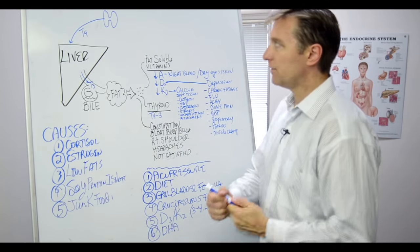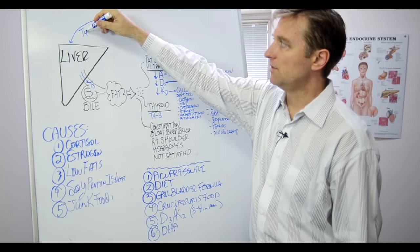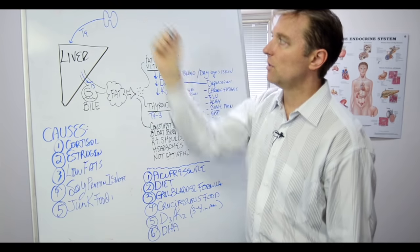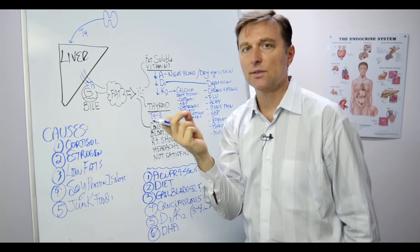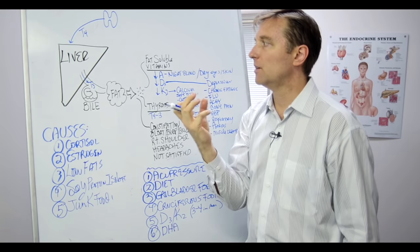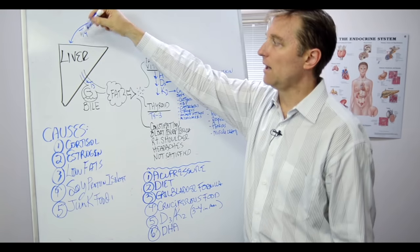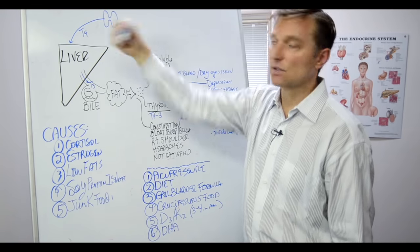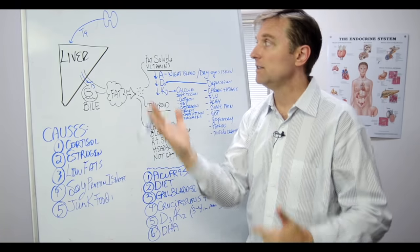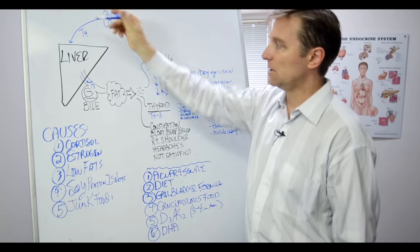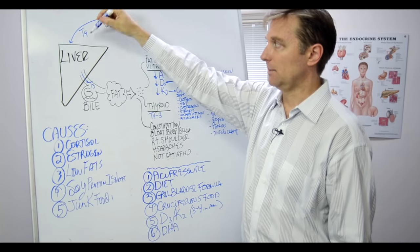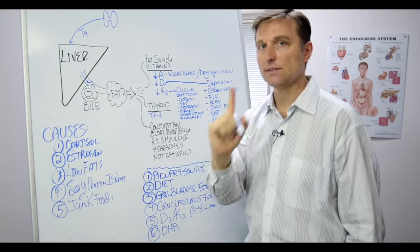80% of the thyroid function is converted through the liver. So T4 is converted through the liver and T4 just represents the number of iodine molecules to that thyroid hormone. So the bile strips off an iodine into T3. T3 is the active form of thyroid hormone. So T4 doesn't do anything in the body unless it converts to T3. And guess what?